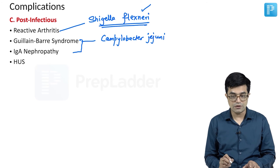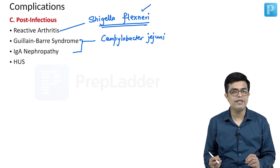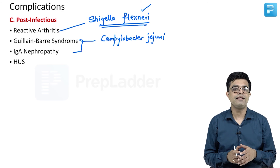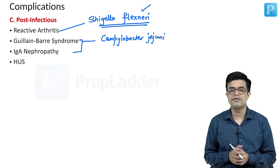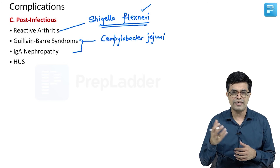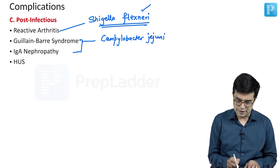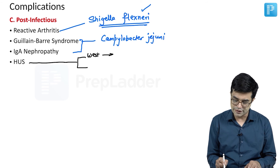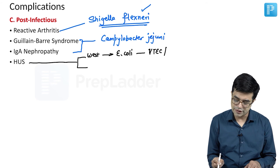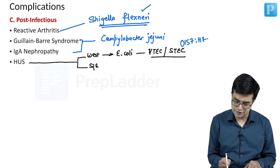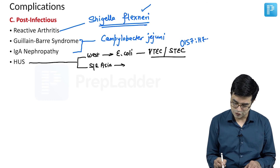Then we have hemolytic uremic syndrome. In the Indian setting, HUS is mostly atypical HUS, associated with anti-factor H antibodies. But outside India — in western countries as well as Southeast Asian countries — you will find the infectious causes, the so-called D-positive diarrhea-producing HUS. Worldwide, HUS is most commonly produced by two pathogens: in the western world it is a post-infectious complication of diarrhea caused by verocytotoxin-producing E. coli or Shiga-toxin-producing E. coli, particularly O157:H7; whereas in Southeast Asia, Shigella is a common pathogen.